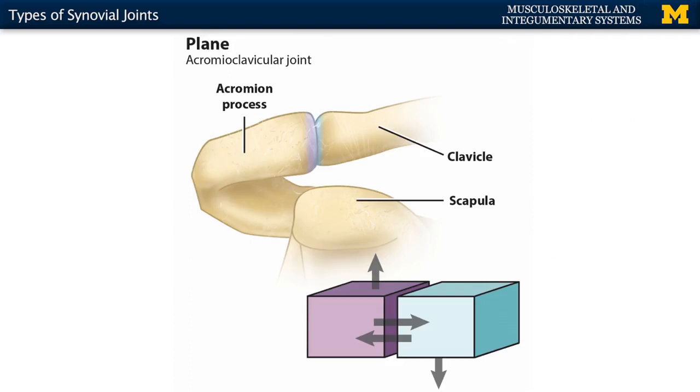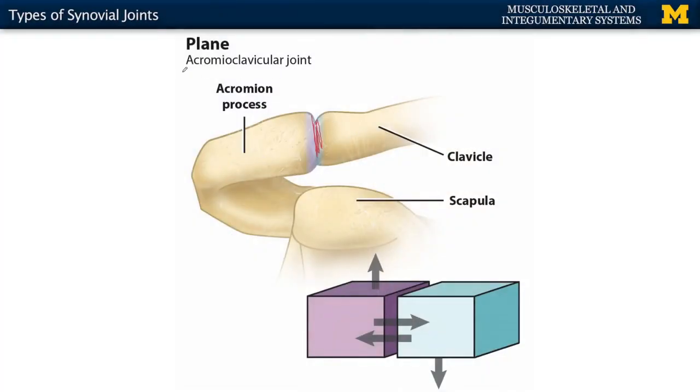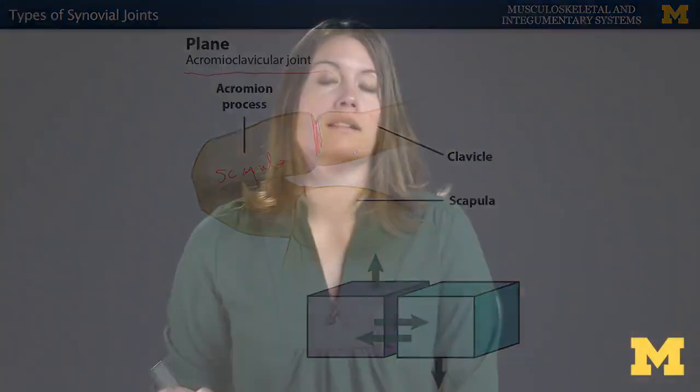Plane joints, in terms of their articulating surfaces, are almost exactly flat. As you can see here, the ends of the bones are almost completely flat, allowing for these bones to almost slide past one another. These are typically biaxial, though sometimes they can be multi-axial as well. One of the best examples is your AC joint, or acromioclavicular joint — the acromion process of your scapula and the lateral end of your clavicle — allowing slight movement up and down and sometimes even anterior and posterior.